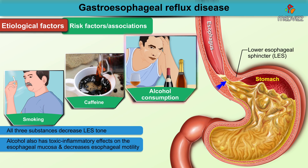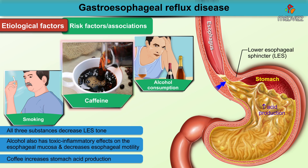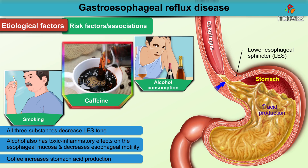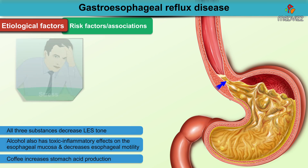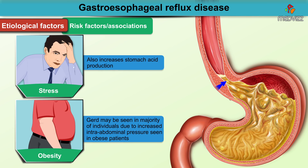Coffee increases stomach acid production, and due to repeated bouts of reflux, the esophageal mucosa is subject to chemical injury from stomach acid. Stress also increases stomach acid production. GERD may be seen in a majority of individuals due to increased intra-abdominal pressure, as seen in patients who are obese.